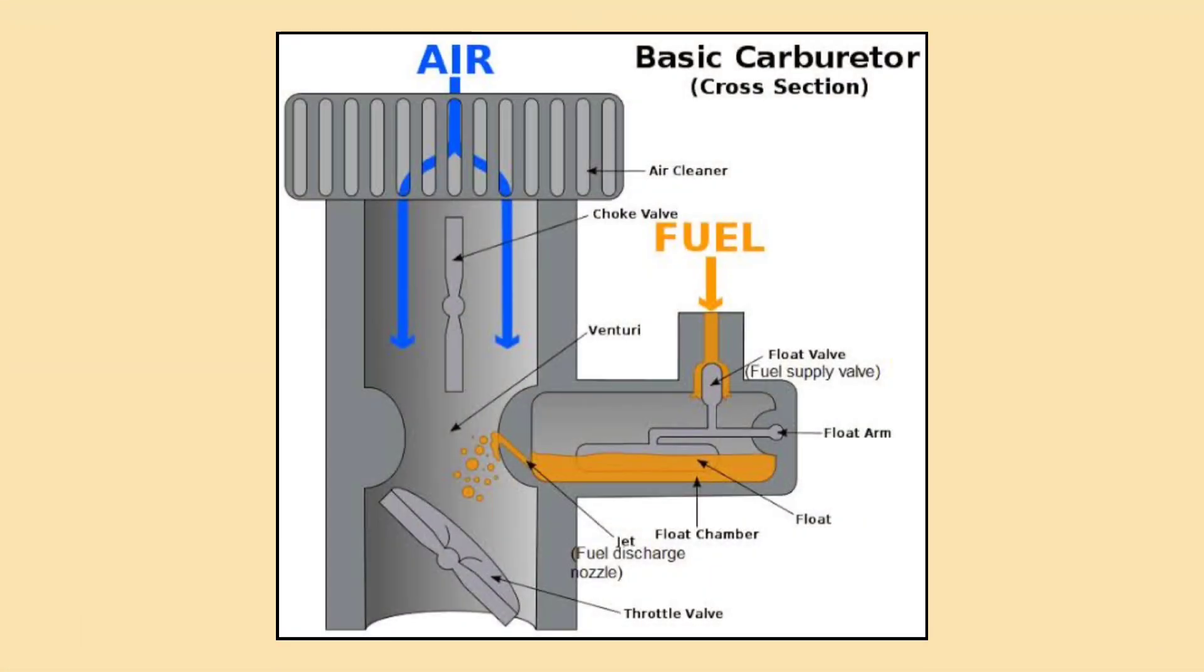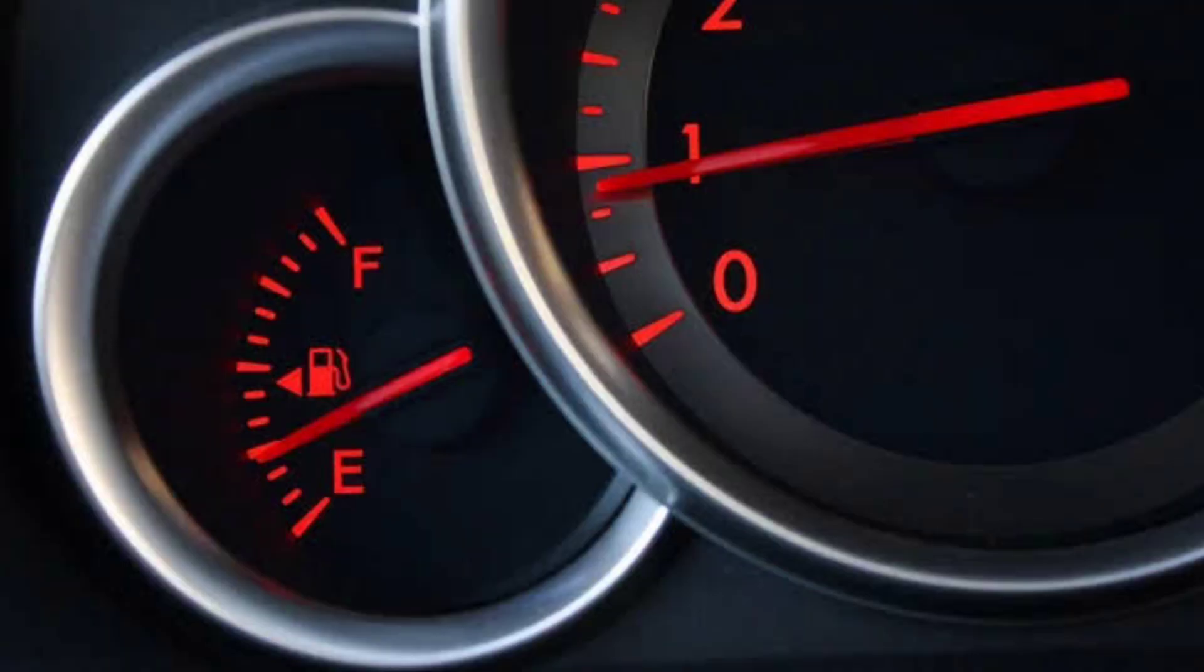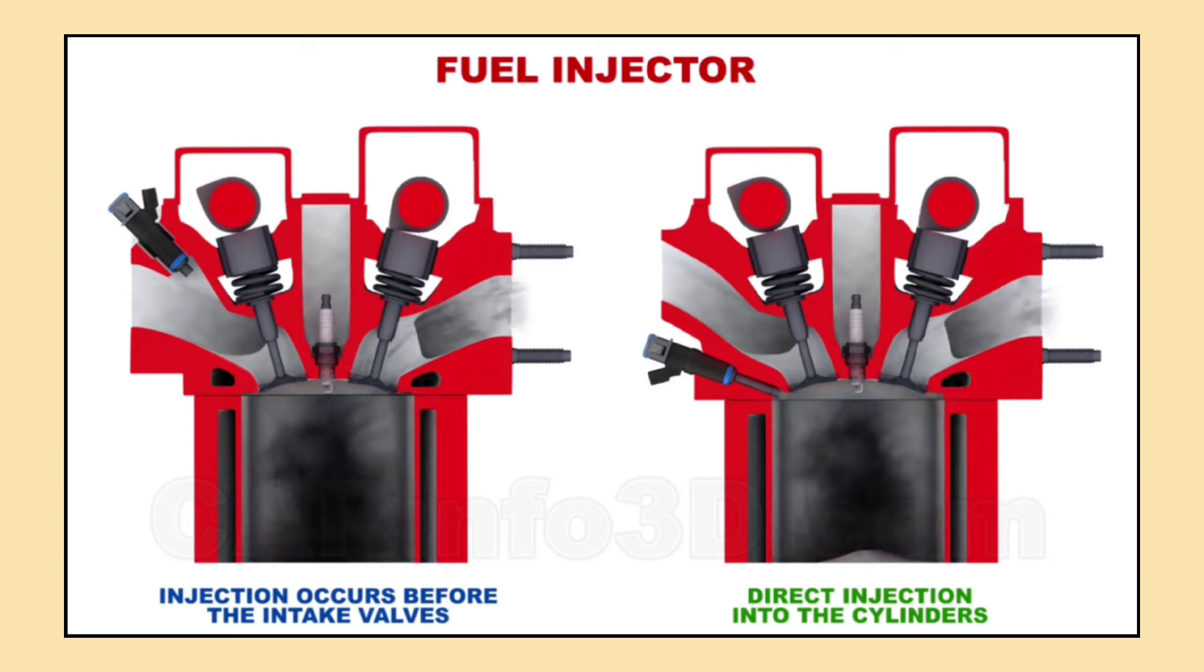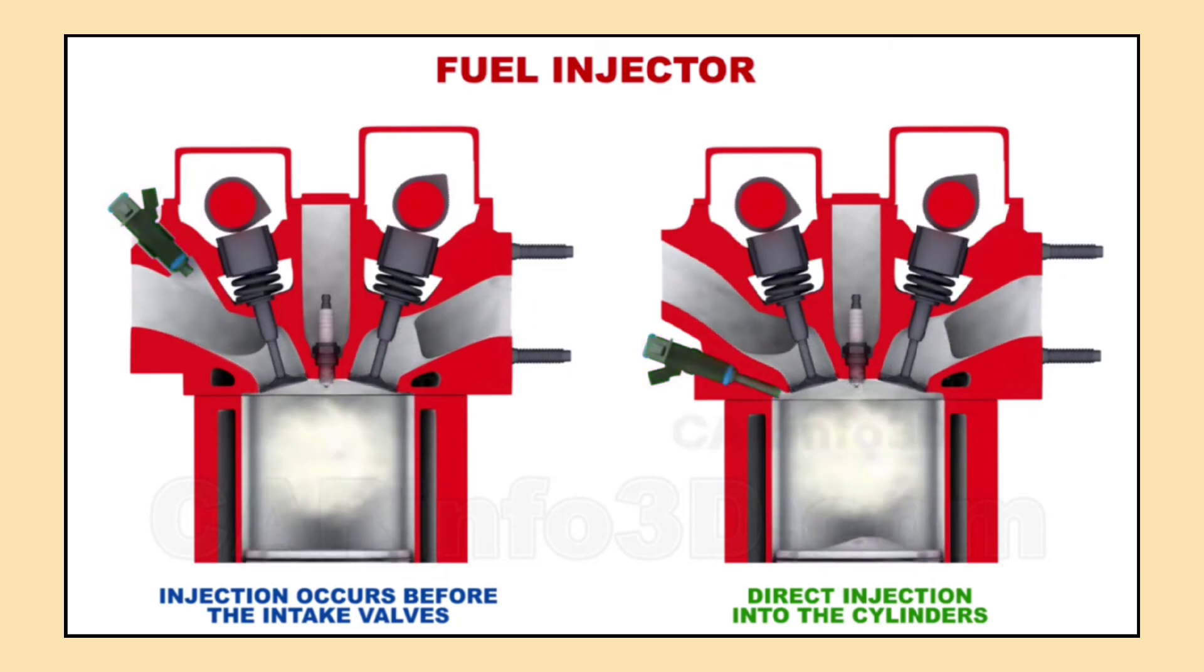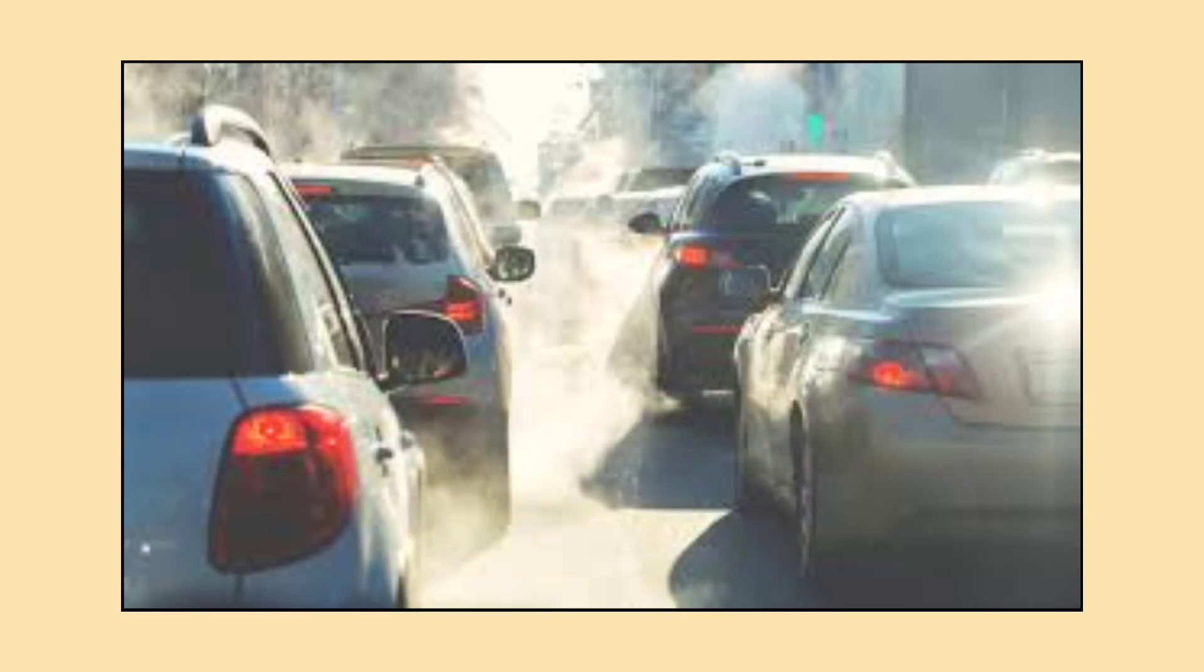In terms of fuel efficiency, carburetors tend to waste more fuel because they can't adjust in real time. This is why cars with carburetors often have worse mileage. Fuel injection, on the other hand, makes sure that only the exact amount of fuel needed gets used, which means fewer stops at the gas station. Another key difference is emissions. Because fuel injection is so precise, it helps reduce harmful emissions. Carburetors in comparison tend to release more pollutants because they can't regulate the mixture as effectively.